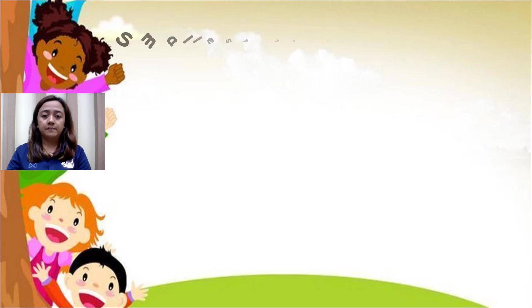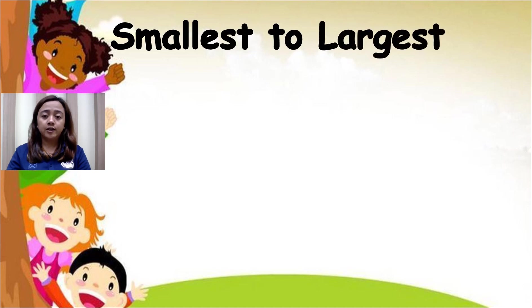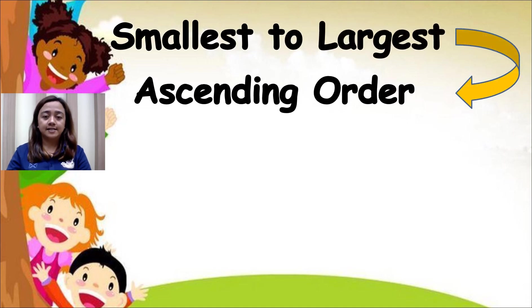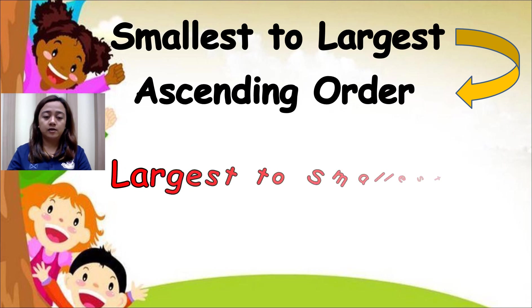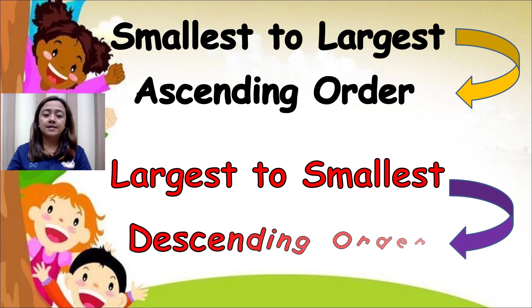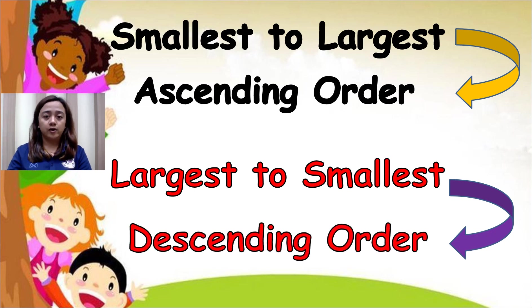So remember: smallest to largest is ascending order, and largest to smallest is descending order.